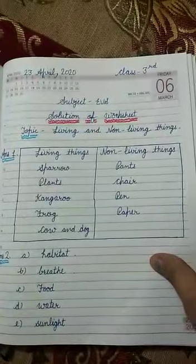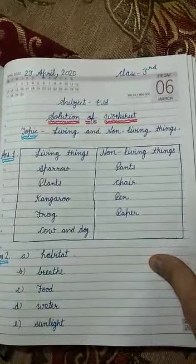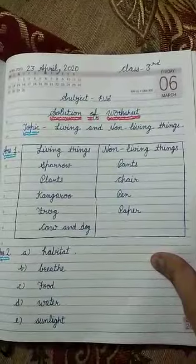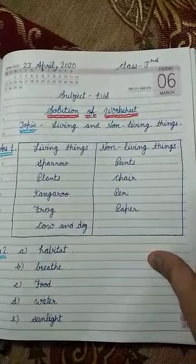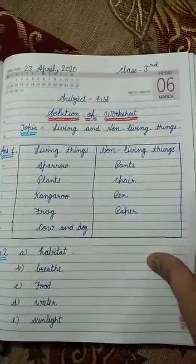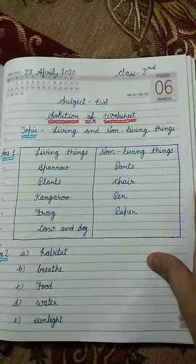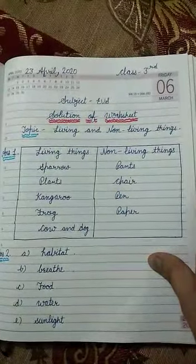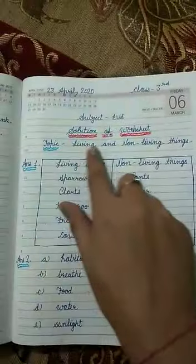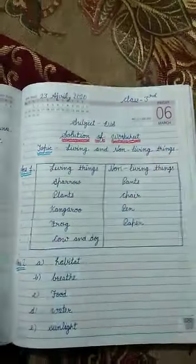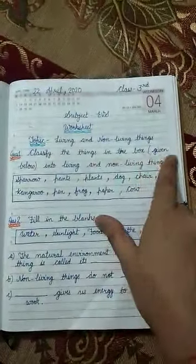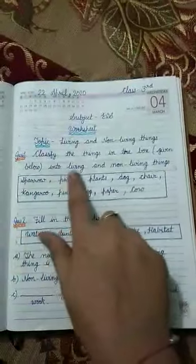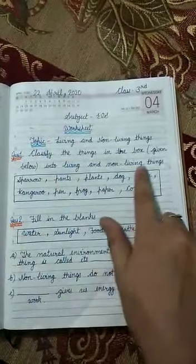Good morning third class. Yesterday I had given you a worksheet, so today here is a solution of that worksheet. The topic was living and non-living things. Our first question was: classify the things in the box given below into living and non-living things.